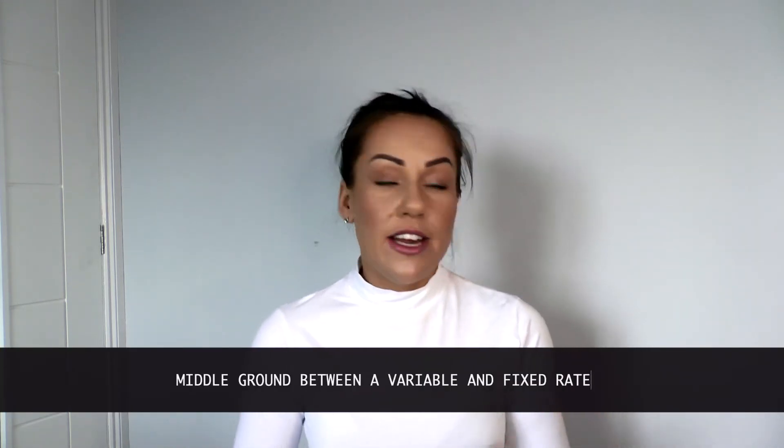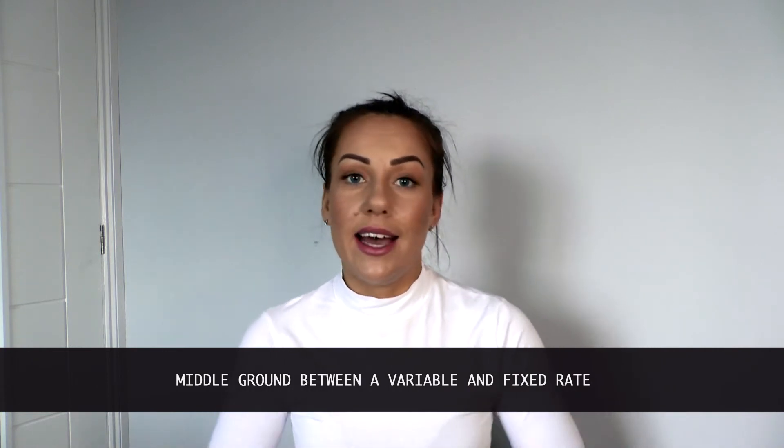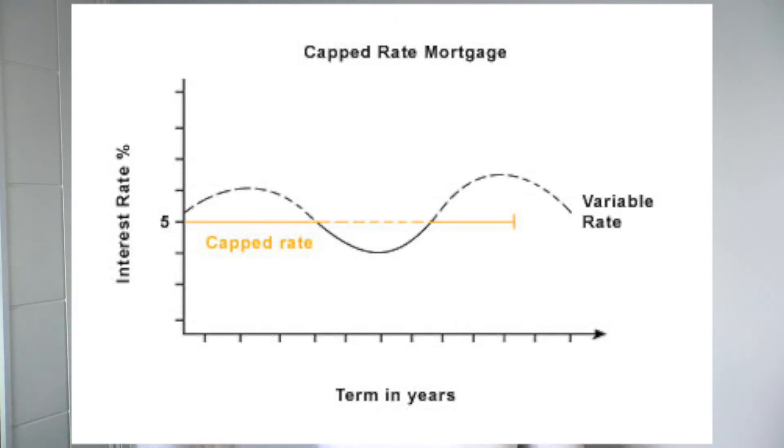The best way to describe a capped rate is it's the middle ground between a variable rate and a fixed rate, in that you have a cap at the maximum level the interest rate is allowed to go up to. So let's say you are capped at 4% — if interest rates in the market rise to 5%, your rate will only increase to that 4%, it will not go above that. This capped rate will move in line with the standard variable rate, up to that capped amount.